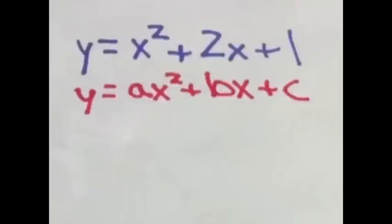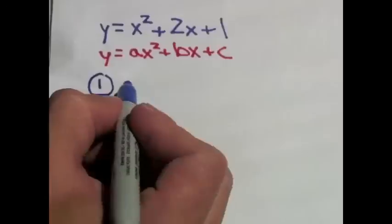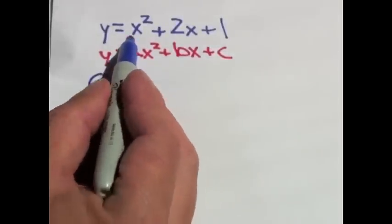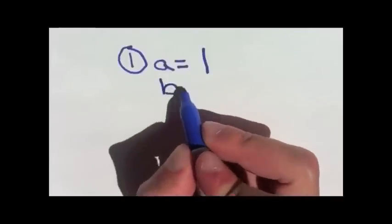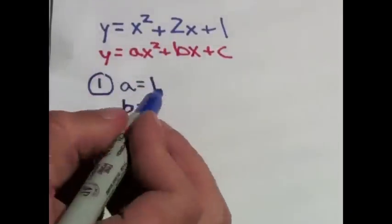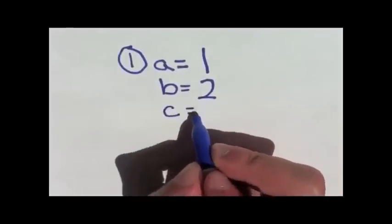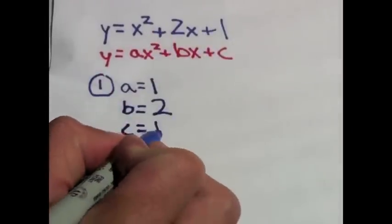First step, find a, b, and c. From looking at our equation, we can see the coefficient of x squared is 1 — it's not written, but we know we have 1x squared. So a is 1. b is the coefficient of x, which is 2 in this case. And c is the constant, the number by itself at the end. In this case, c is 1.